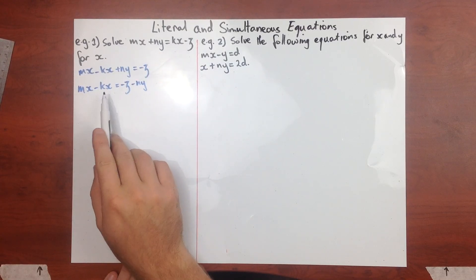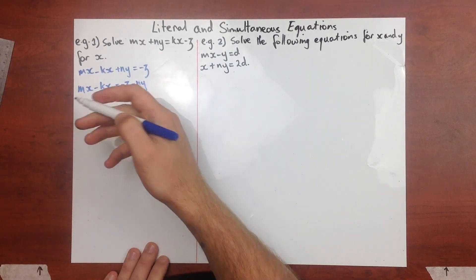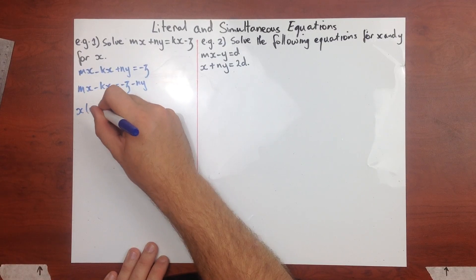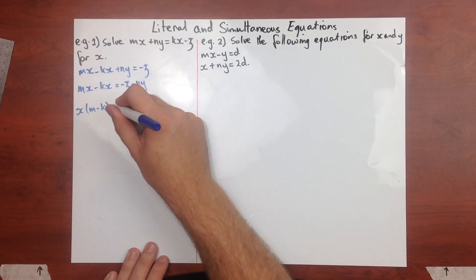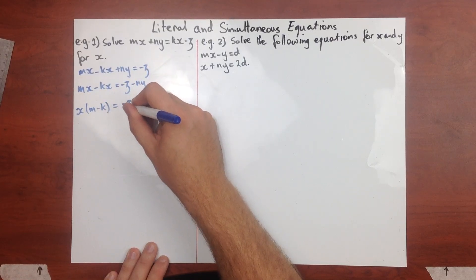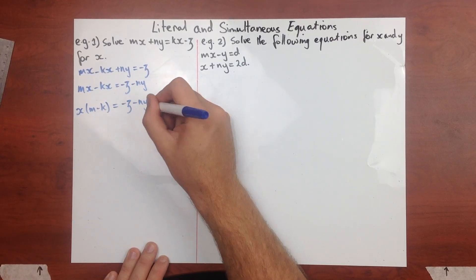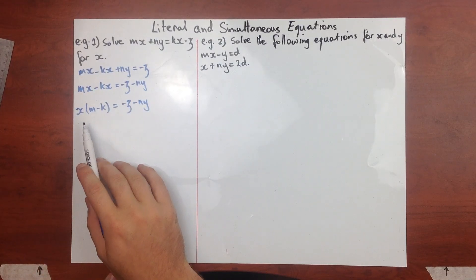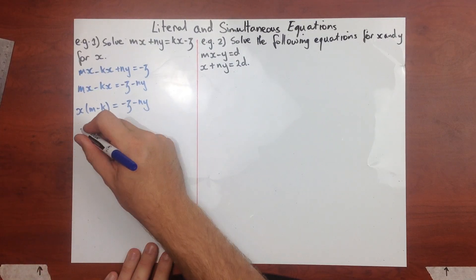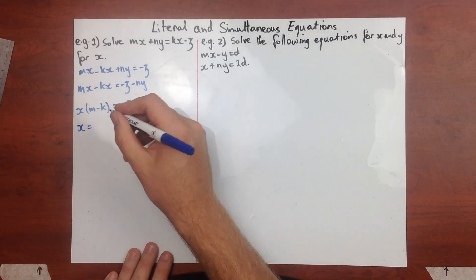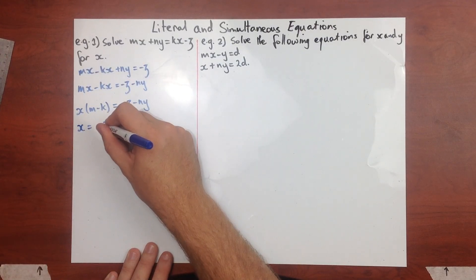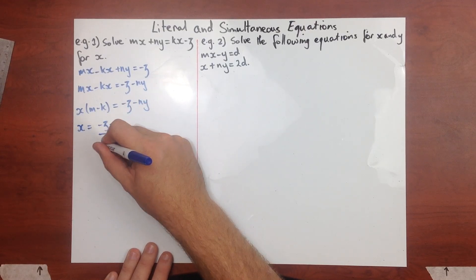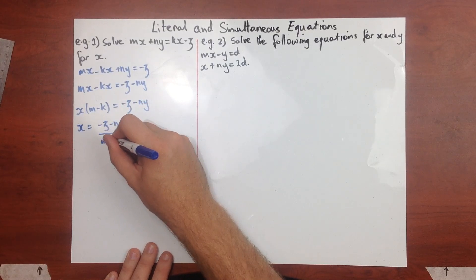Now I'm going to take x out as a common factor: x times (m minus k) equals negative z minus ny. Then we divide both sides by (m minus k), leaving us with x equals (negative z minus ny) over (m minus k).